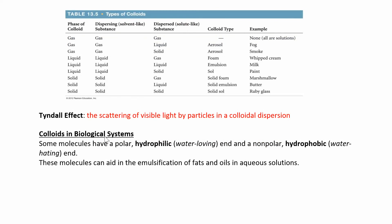In our biological systems, we also have colloids. Different types of proteins can be considered colloids. You have hydrophobic or hydrophilic — hydrophilic means it likes water, so it might have one water-loving end and one hydrophobic, water-hating end. You may see these in fats and oils when your body starts breaking these things down, forming different colloidal substances.